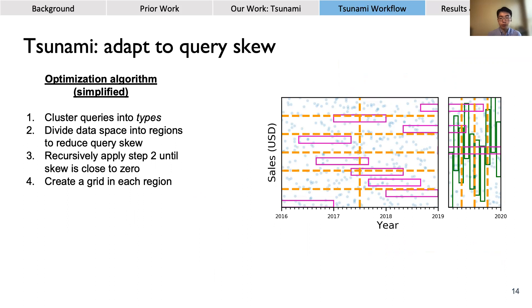The third step recursively applies the division in each resulting region until query skew is close to zero. The final step creates a grid in each region specialized for only the queries that fall there. Our paper contains more details about the optimization algorithm and also how Tsunami deals with data correlations, which is another major contribution not covered in this talk.